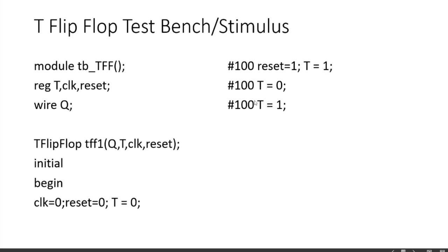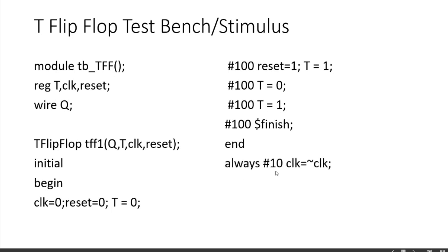When T is 1 the output should toggle; when T is 0 the output should remain the same. We also generate the clock using the always block. This is how you write down the complete test bench for the T flip-flop. Now we have both the design module and the test bench ready — you can simulate these in your simulator and verify the truth tables for the T flip-flop, having learned how to design it using behavioral modeling in Verilog HDL.